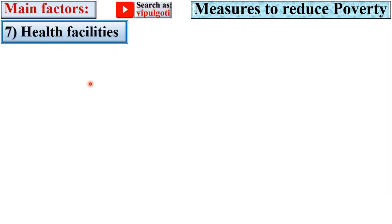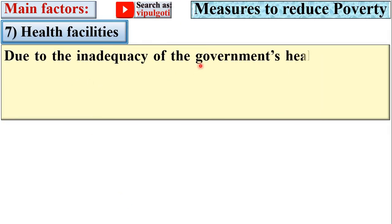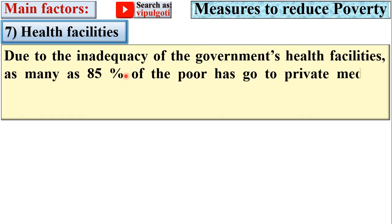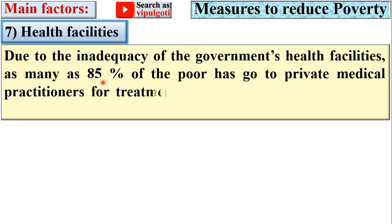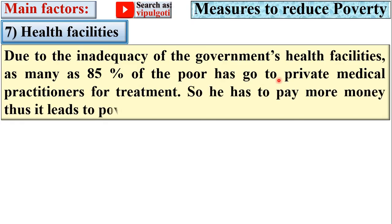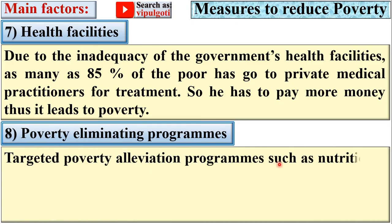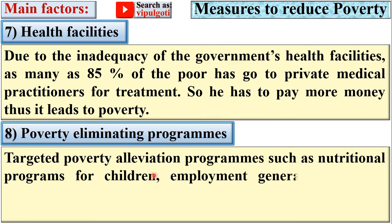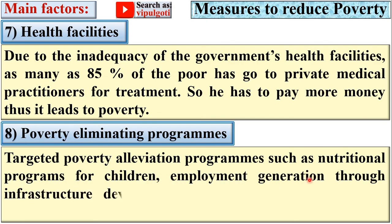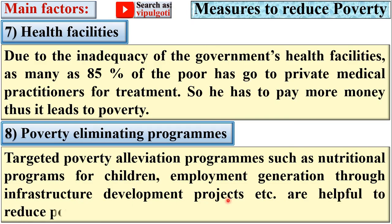Next, health facilities. Due to the inadequacy of the government's health facilities, as many as 85% of the poor go to private medical practitioners for treatment, so they have to pay more money, which leads to poverty. Next, poverty eliminating programs. Targeted poverty elevation programs such as nutritional programs for children, employment generation through infrastructure development projects, etc., are helpful to reduce poverty.